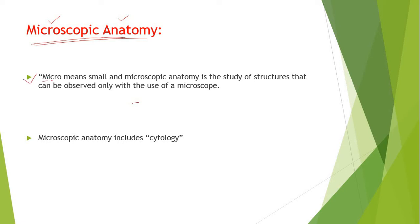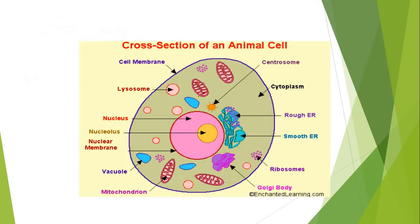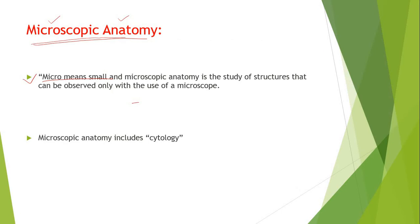Micro means small and microscopic anatomy is the study of structures that can be observed only with the use of a microscope. We can study this body structure or organs by using microscope.